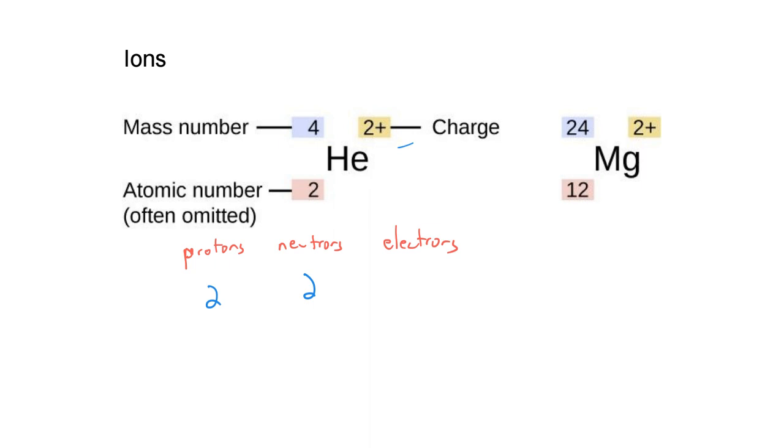The neutrons have to add up to be 4 so it will have 2 neutrons as well. But electrons count as a negative charge and protons count as a positive charge. This has a net positive 2 charge so it must have zero electrons because these two positive charges aren't being cancelled out by anything.